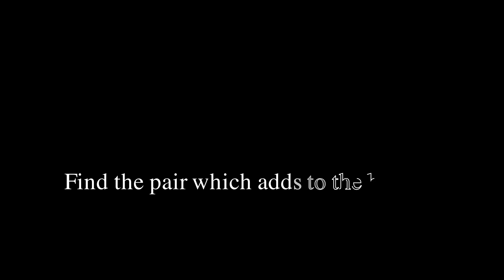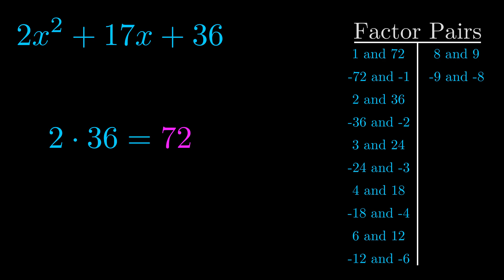The b value is the coefficient on the x term. That's the middle term, the one that we haven't done anything with yet. And really this is the only factor pair that we need.